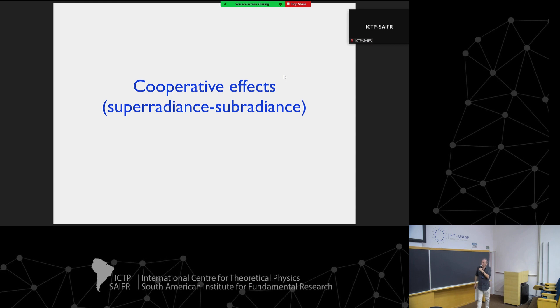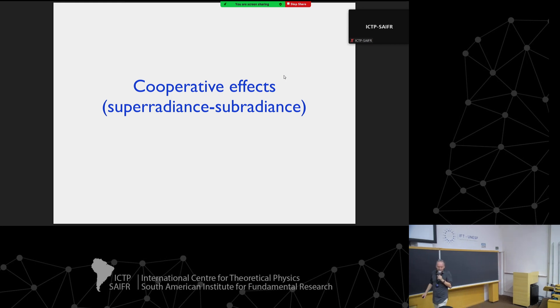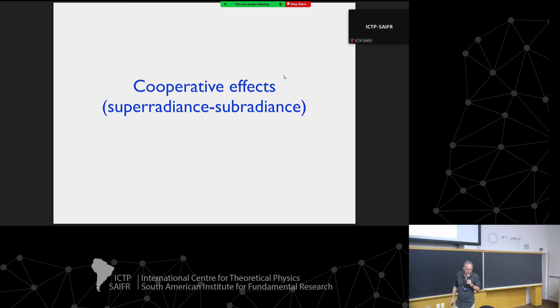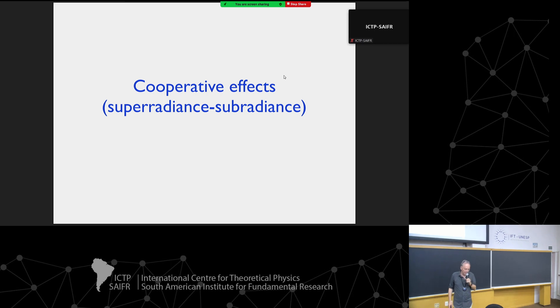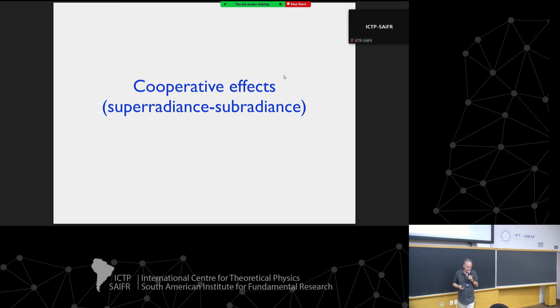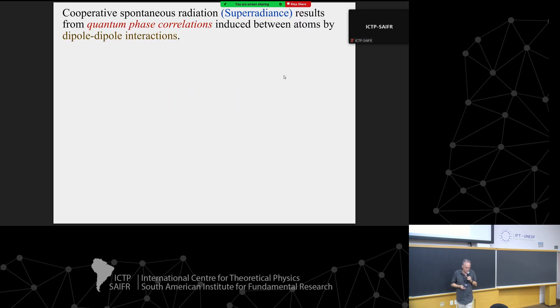In the sense that I said Anderson transition has never been observed, this kicked rotor is not a spatial localization of waves or electrons — it is in momentum space. It is the same universality class, and in that sense it is an Anderson phase transition. But here you don't see any localization in real space. Now let's discuss cooperative effects: superradiance and subradiance.